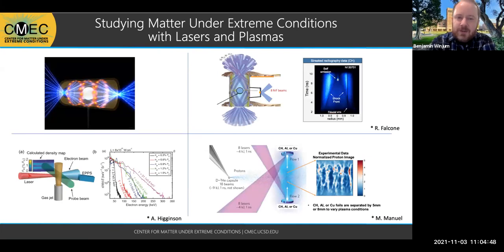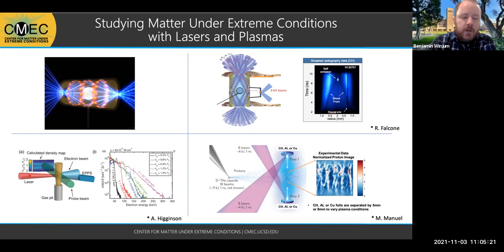The center is studying matter under extreme conditions. With lasers and with plasmas, I've shown four particular use cases. This is a NIF hohlraum where lasers irradiate the interior of the hohlraum in order to drive the implosion of a fuel pellet. The lasers have to propagate through plasmas, and you have to be careful about how the lasers interact with the plasmas as they propagate through and create the x-ray drive for the fusion.